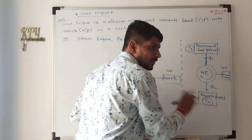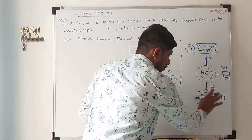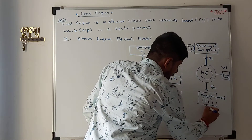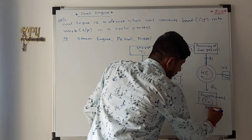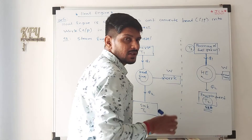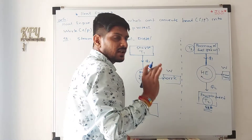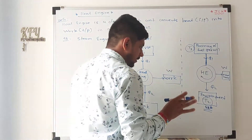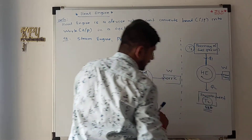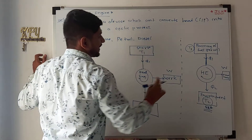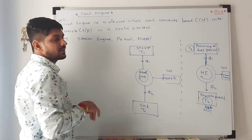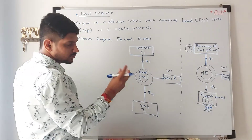So basically this T2, in most cases, is nothing but our room temperature — the surrounding temperature or environment temperature. And here T1 will be the temperature inside during the burning of fuel.